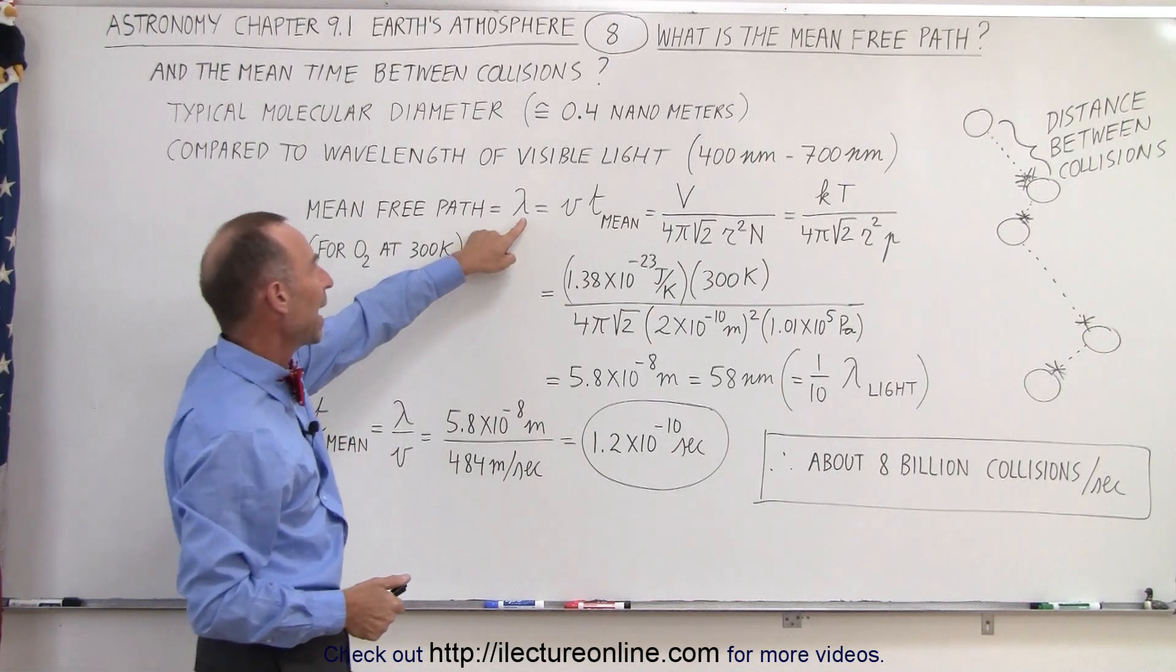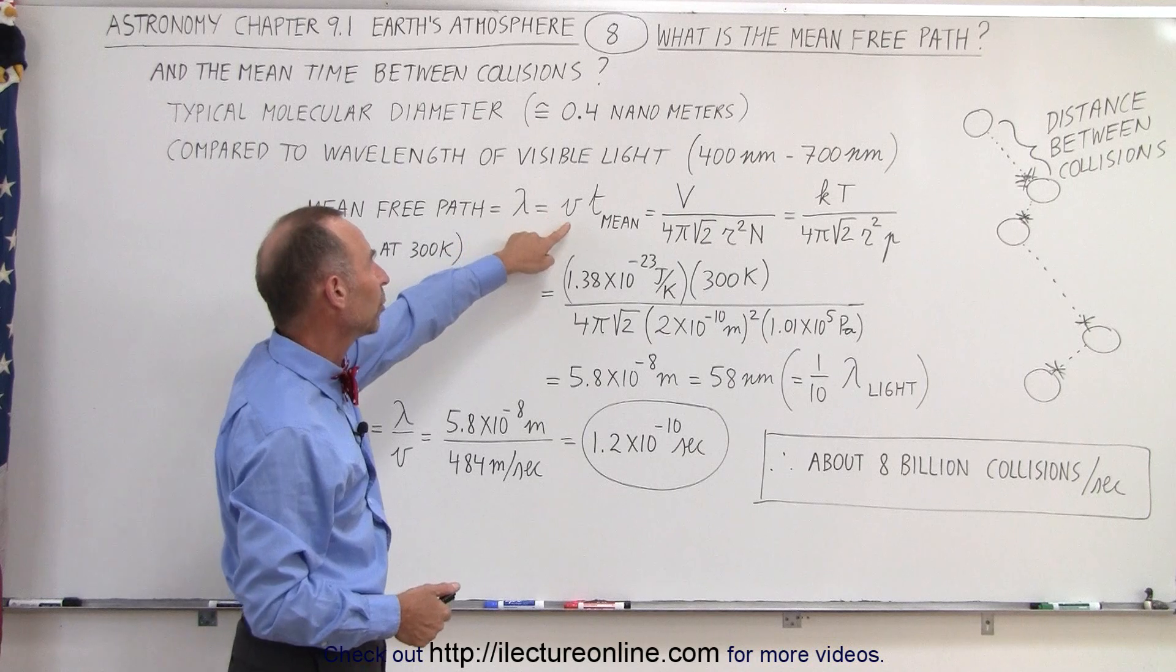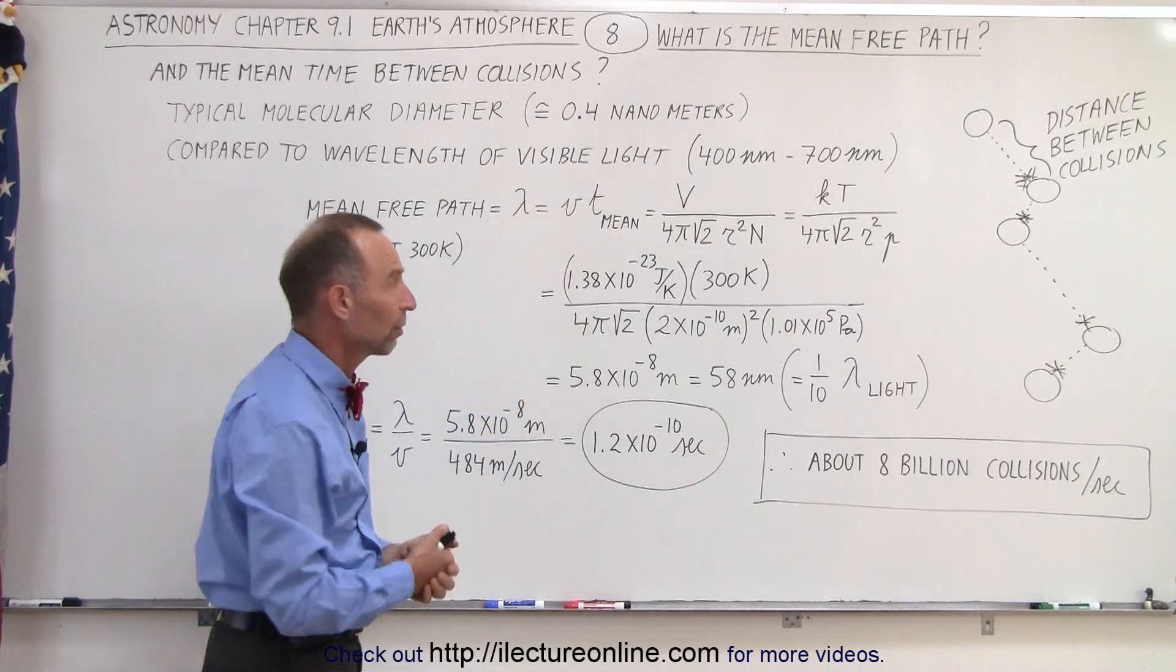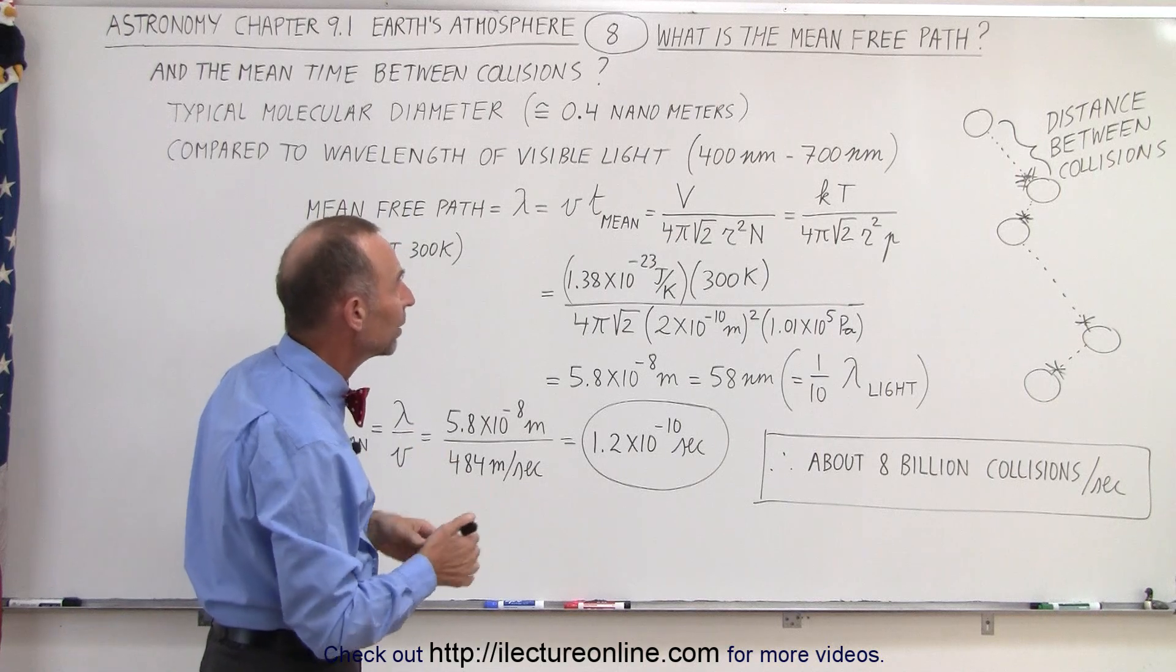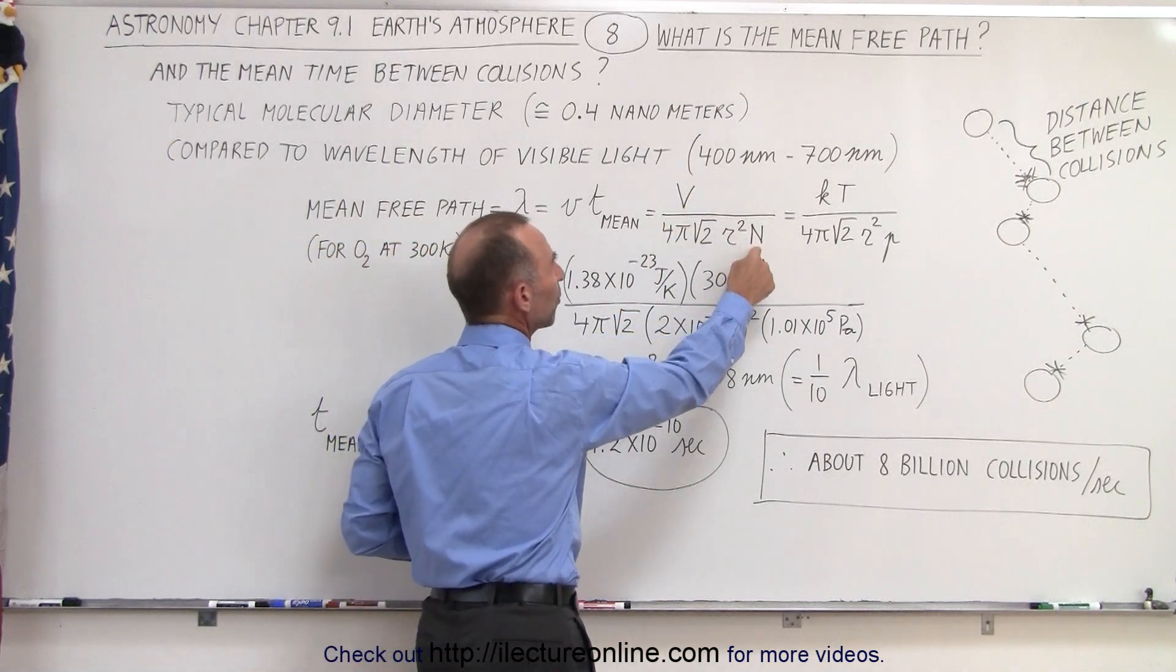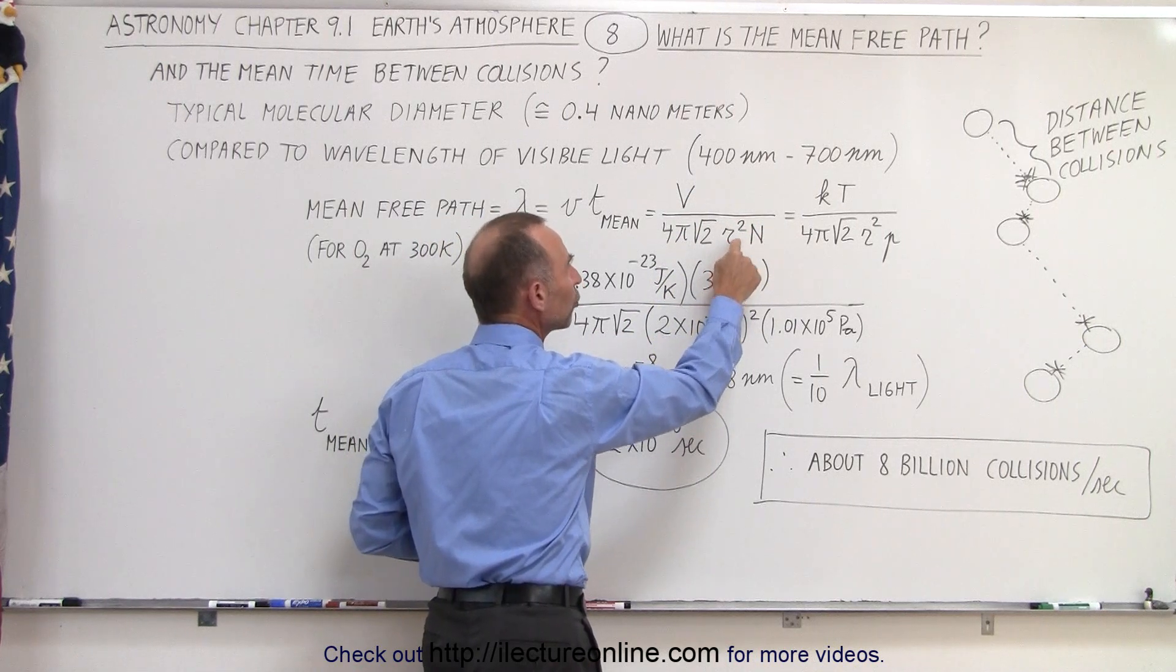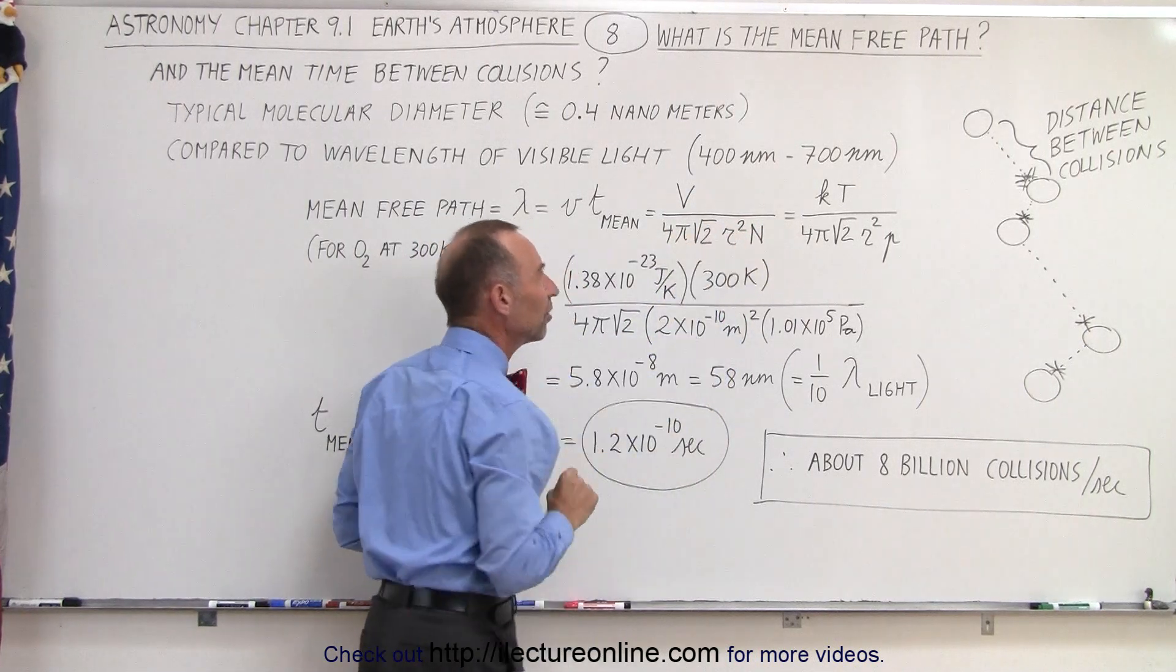So the mean free path, using the letter lambda, is simply equal to the velocity times time. Distance equals velocity times time. That's pretty straightforward. We can calculate it using the volume of a container, with the number of molecules in it, and the radius of each molecule squared, with some constants in it.